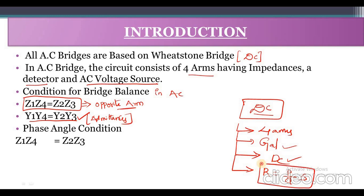In AC Bridges, a phase angle condition also exists. The phase angle condition is Z1·Z4 at angle (θ1 + θ4) equals Z2·Z3 at angle (θ2 + θ3). This is the phase angle condition in the case of AC Bridges.